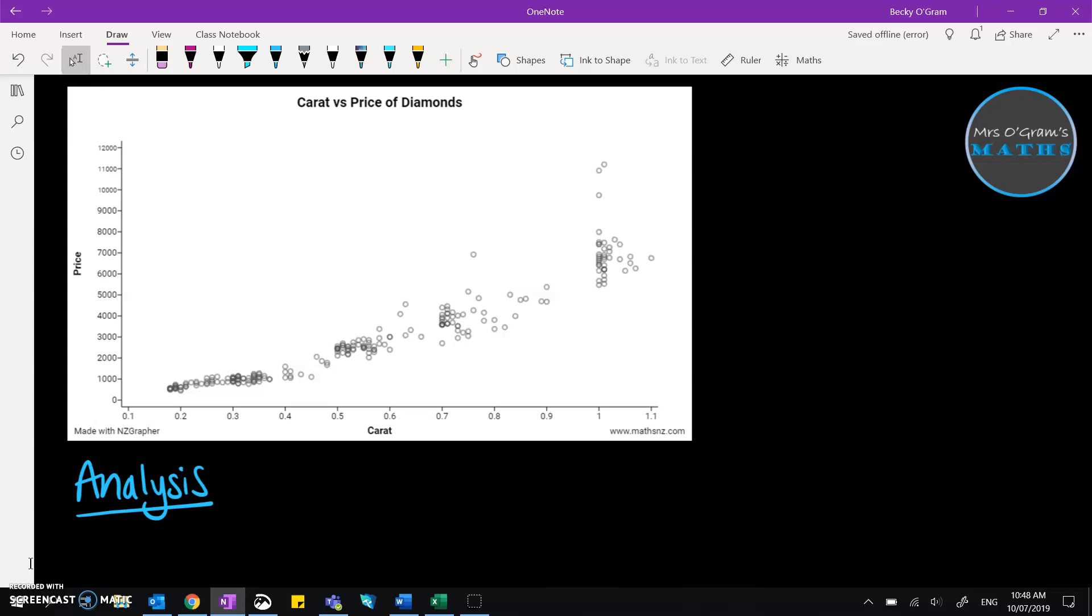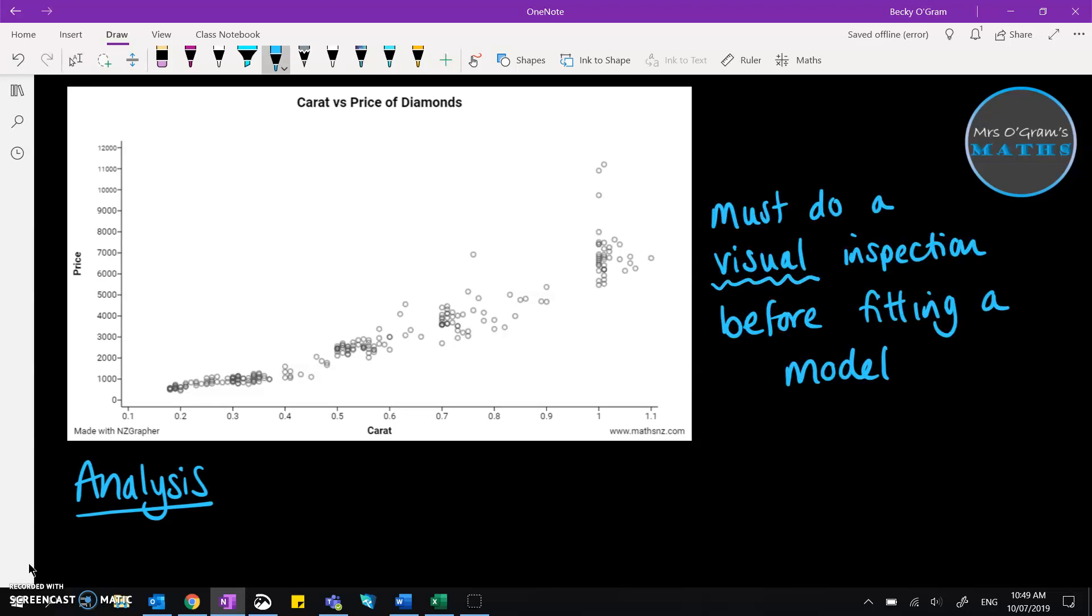it's really important that we first of all look at the graph without any model fitted to it. That means no lines applied to it. Part of the standard is that you must do a visual inspection before fitting a model and the easiest way to do that is to produce your graph with nothing else on it, no lines or anything first. Talk about that and then introduce the graph that has the lines on it.